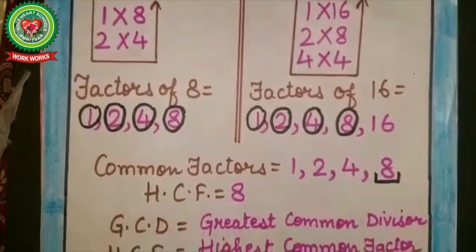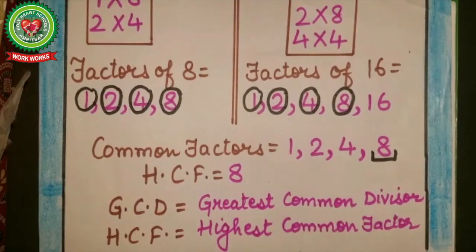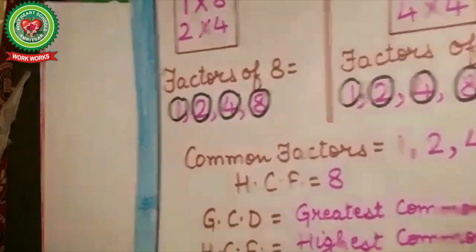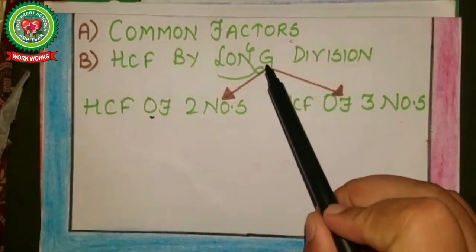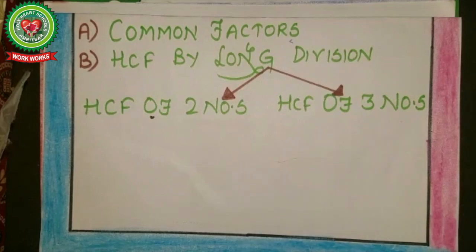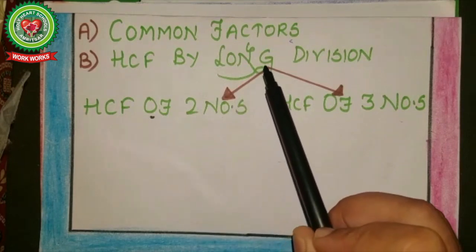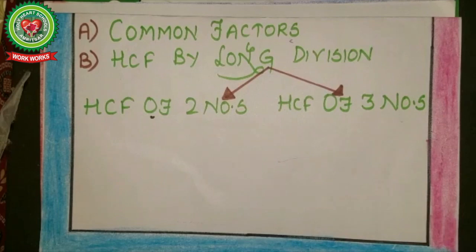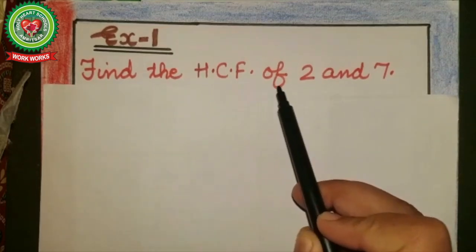Today's topic is HCF — its other name is GCD, that is Greatest Common Divisor. There is one more method to find the HCF: that is the long division method. Today I will discuss with you HCF of two numbers by long division method. To understand this, let's take some examples.